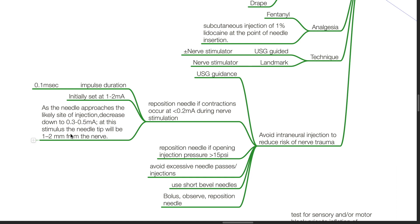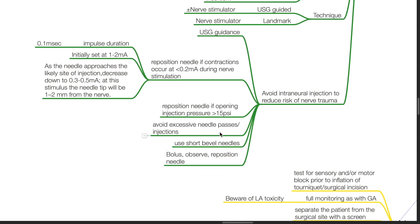At this stimulus, the needle tip will be 1 to 2 millimeters from the nerve. Reposition the needle if opening injection pressure is more than 15 psi. Avoid excessive needle passes or injections. Use short bevel needles.